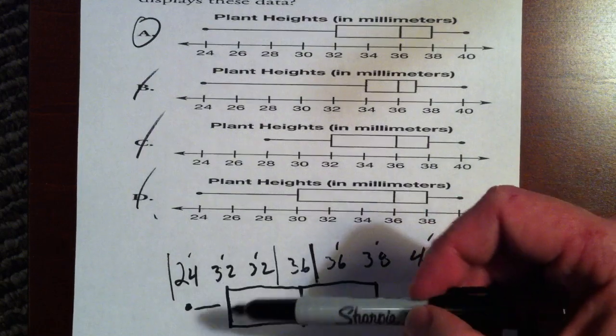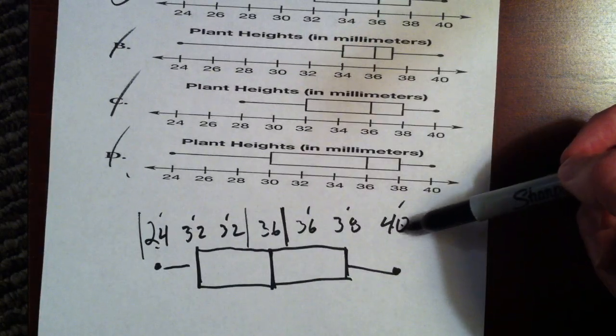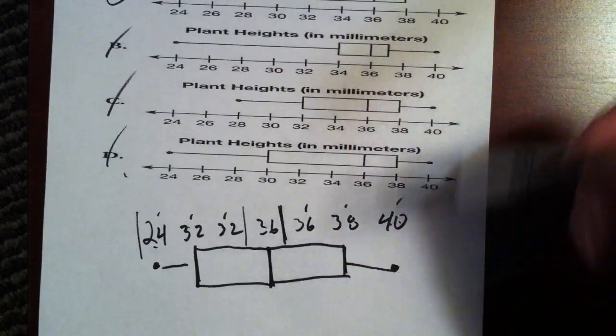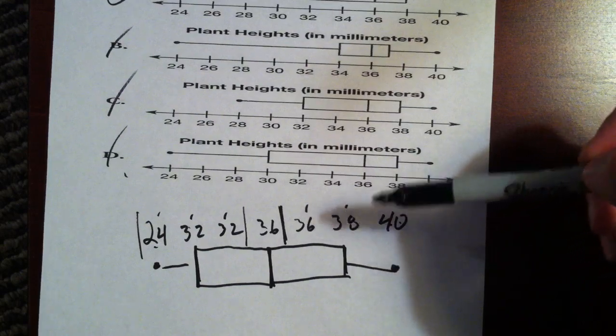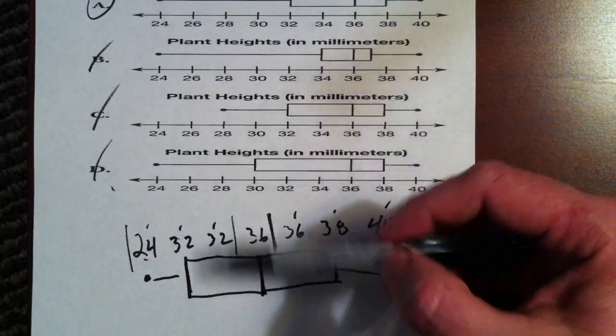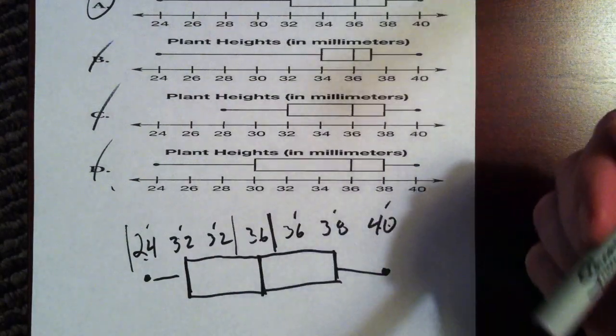So remember, we need the lower extreme, which is the lowest number, the upper extreme, the median. And sometimes you can pick out your box and whisker plot just on that because some of the other data is so messed up. Then we have the lower quartile, which, again, is the median of the first half of the data. And the upper quartile, which is the median of the second half of the data.